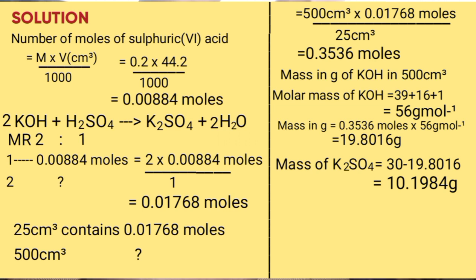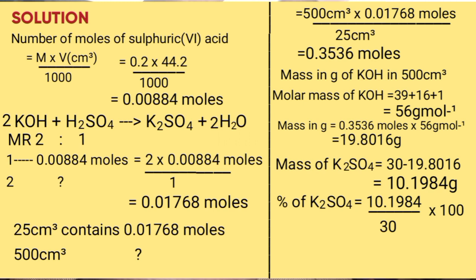Percentage of potassium sulphate = mass of potassium sulphate divided by total mass times 100. That gives 10.1984 over 30 times 100, which equals 33.99%. In the next lesson we look at a sample preparatory question under the aim of percentage composition of the analyte. We'll see you again next time.